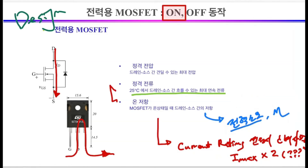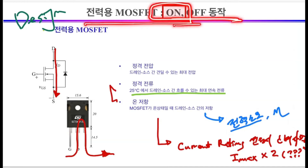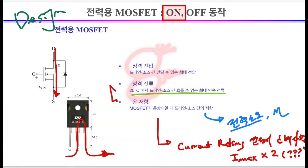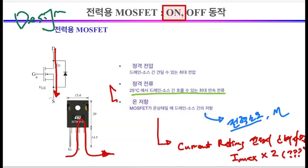Because the power dissipated in the on-resistance is large, it can destroy the MOSFET and greatly affects the efficiency of the converter. Therefore, when looking at the design considerations of power MOSFETs, the rated voltage should be considered first, followed by the rated current. Additionally, MOSFET on-resistance is also an important consideration.